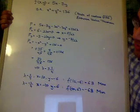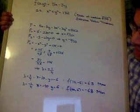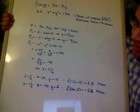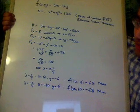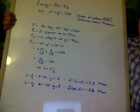So once we have that, we see that x is 10, y is negative 6. Or if lambda is negative one-fourth, then x is negative 10 and y is 6.